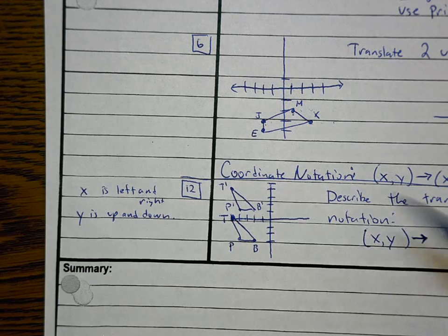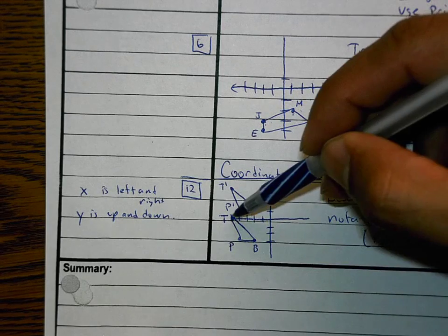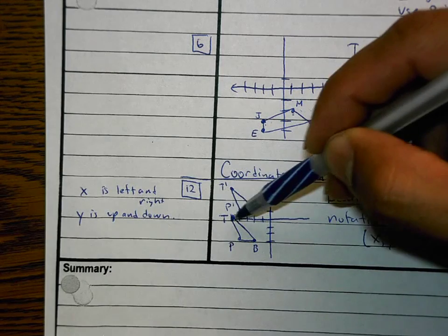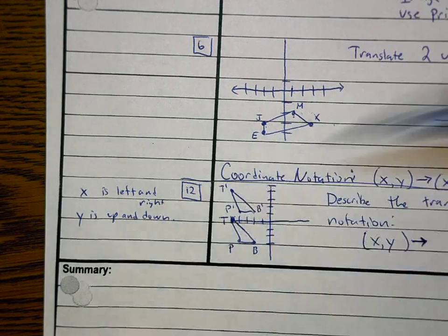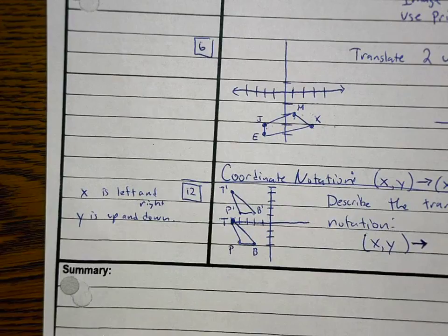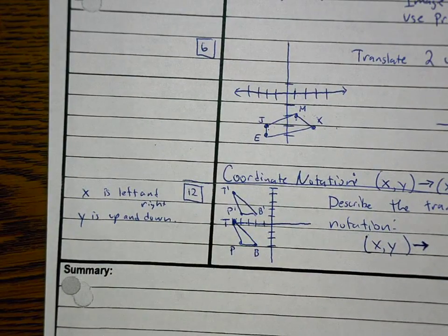When I look at T and T-prime, they didn't move anything left and right. You could think of it as adding zero to X. And then we'd look at how much the Y coordinate changes — that's the up or down movement.